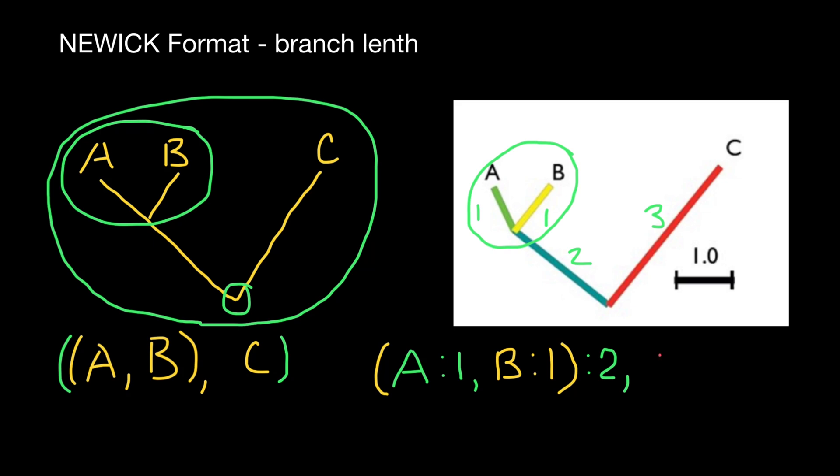Now we also add species C, colon, and 3, which specifies the length, which leads from this common ancestor to species C. So we gave a description of this part.